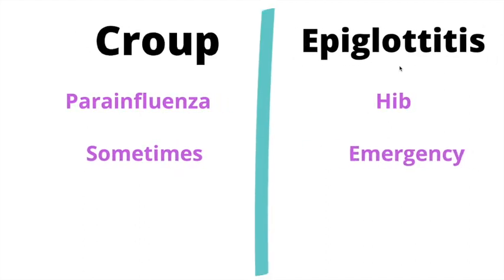The organisms that cause croup and epiglottitis are very different. In croup it's a virus; in epiglottitis it's bacterial. Parainfluenza virus commonly causes croup, while epiglottitis can be caused by H. flu, strep species, or Staph aureus. One key way to prevent epiglottitis is by giving the Hib vaccine. Epiglottitis is an emergency and the initial step is often securing the airway with endotracheal intubation. For croup, patients can be managed with medical treatments such as steroids and nebulized epinephrine; if those fail, we move on to securing the airway and providing mechanical ventilation.